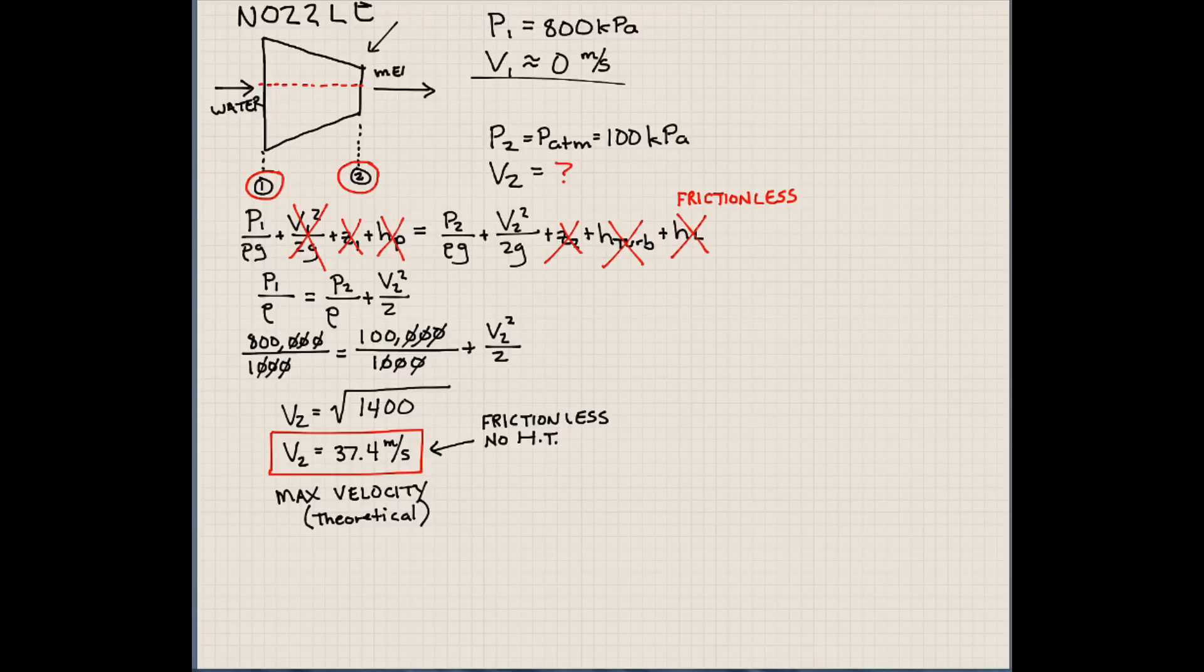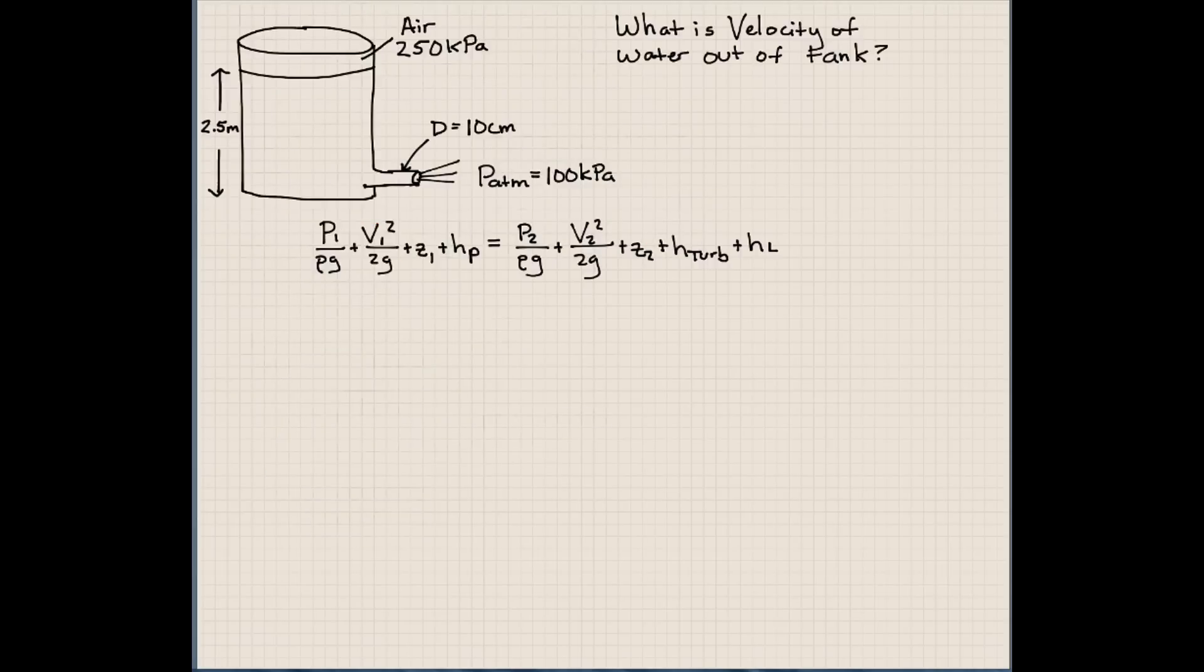So if you were to look at this system and you were to measure the velocity coming out of here, you could kind of know what the theoretical limit of that flow coming out of that nozzle is. It shouldn't be higher than 37.4 meters per second since we made these assumptions. So it gives you a baseline and something to check with and also a design tool for you guys to use as you're looking at these type of problems.